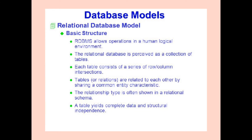Relational database model: the basic structures of RDBMS allow operations in a human logical environment. The relational database is perceived as a collection of tables. Each table consists of a series of rows and columns with intersections. Tables, which are also known as relations, are related to each other by sharing a common entity characteristic. The relationship type is often shown in a relational schema. A table yields complete data and structural independence.